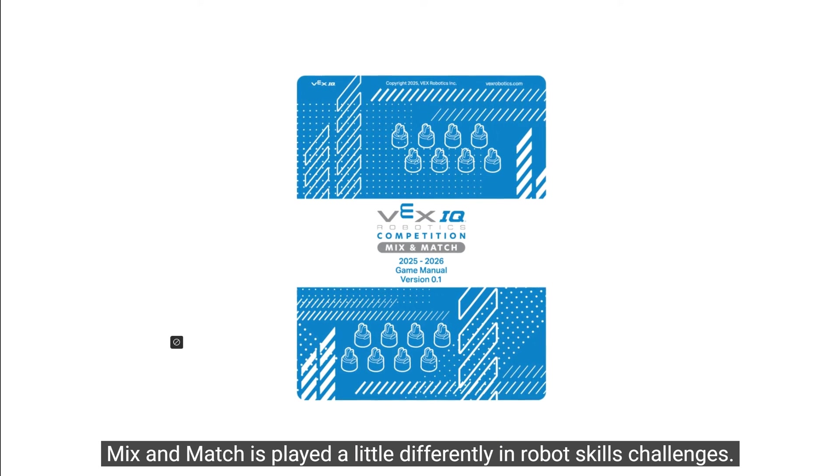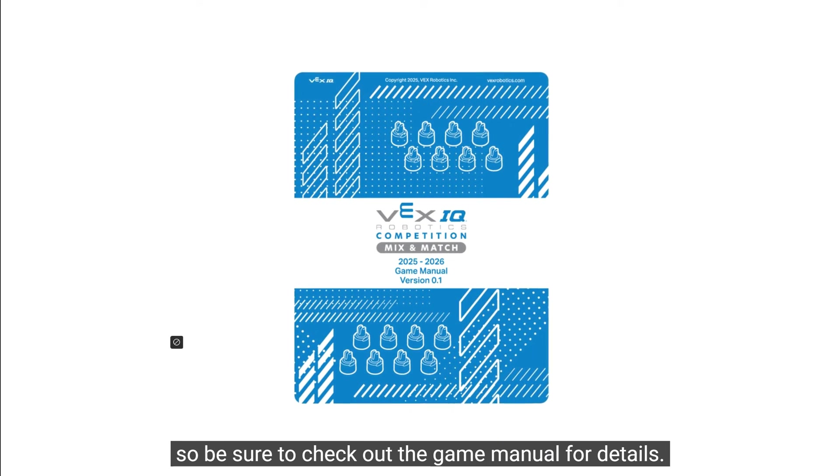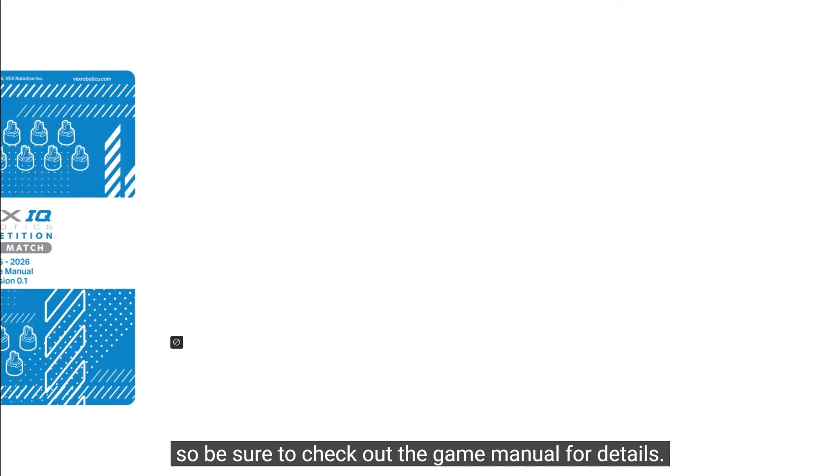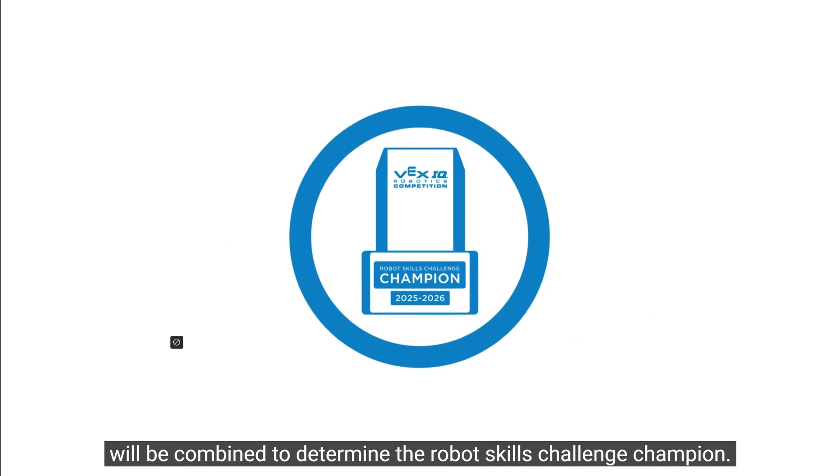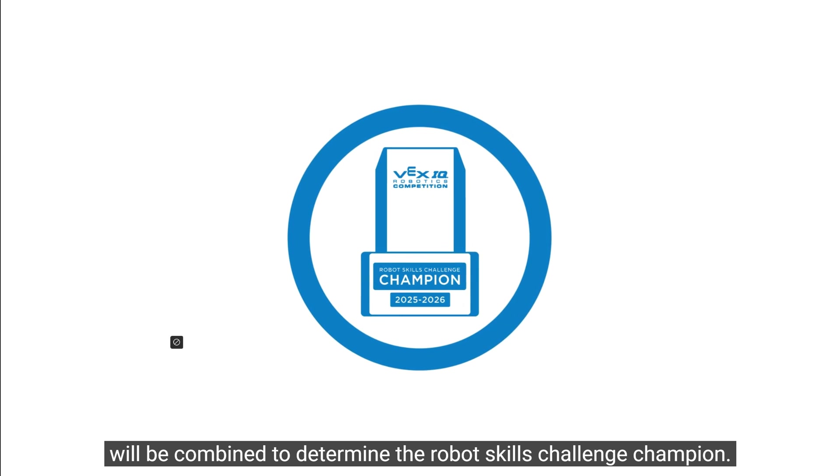Mix & Match is played a little differently in robot skills challenges, so be sure to check out the game manual for details. The scores from driving and autonomous coding skills challenges will be combined to determine the robot skills challenge champion.